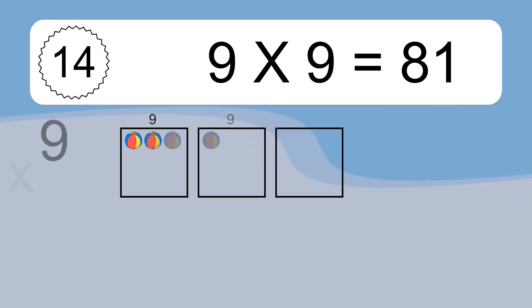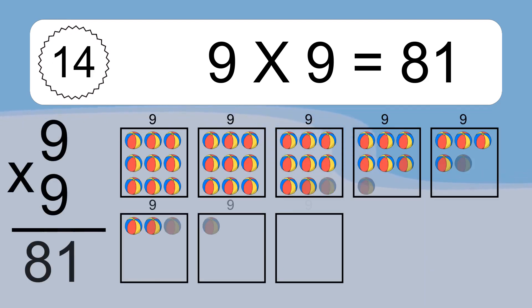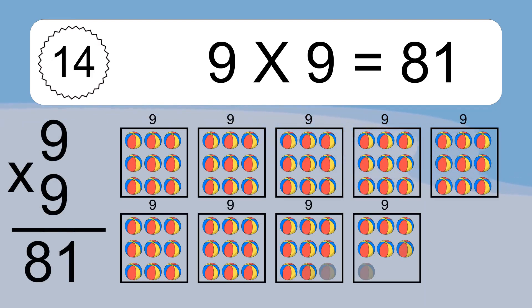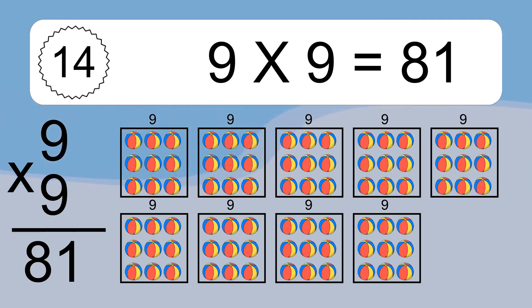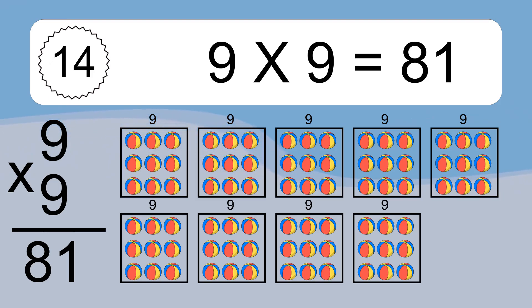9 x 9 equals what? 9 x 9 equals 81. We have 9 boxes, and each box has 9 colorful balls inside. If you count all the balls in all the boxes together, you will have 9 x 9 balls. This equals 81 balls.